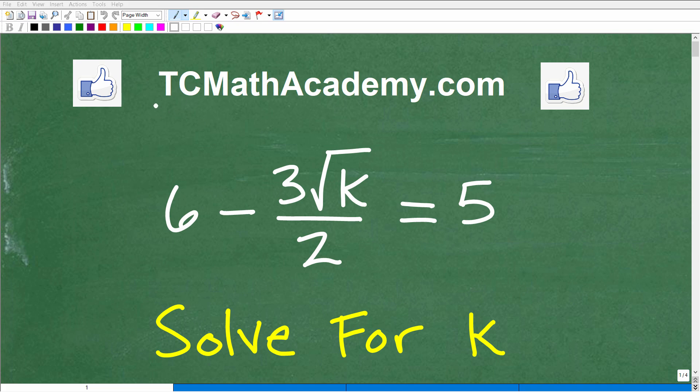Hello, this is John from TC Math Academy. In this particular equation we're going to be solving for the variable k, and k is right underneath this square root. The equation is 6 minus 3 times the square root of k over 2 equals 5. I'm going to be talking about two ways you could approach this particular equation, and it's going to involve something called rational exponents.